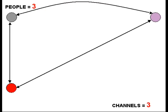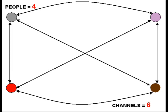With three people, that one channel jumps to three. You added one person and got two more channels. With four people, you go from three channels to six channels. You added one person and got three more channels.